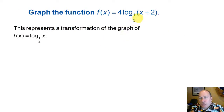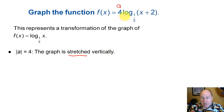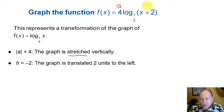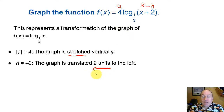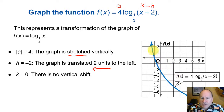Now consider f of x equals 4 log base 1/3 of x plus 2, where x plus 2 is in parentheses, so we have an h value other than 0. This transforms the parent function log base 1/3 of x. First, a equals 4, so the graph is stretched vertically by a factor of 4. Since it's in the form x minus h, our h value is negative 2, so the graph is shifted 2 units to the left. There is no vertical shift. Compared to the parent function, it is stretched vertically and translated 2 units to the left.